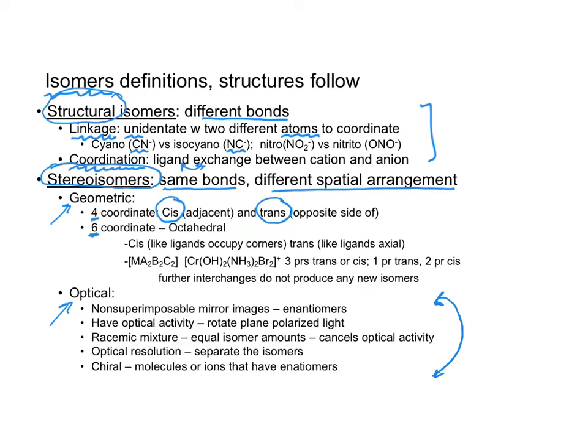The second type of stereoisomer you will encounter when you take organic chemistry. That is called an optical isomer. First, I'm going to go over the terms and then I'll show the picture. Non-superimposable mirror images. Another term is called an enantiomer. They have something called optical activity. It is going to rotate plane polarized light. Think about sunglasses when they're polarized. They cancel out a certain kind of radiation. If we have something called a racemic mixture, we have our enantiomers in equal isomer amounts. That will cancel out the optical activity. If I want to separate the two, I will do something called optical resolution. I want to use the last term which is called chiral. Those are molecules or ions that have enantiomers.